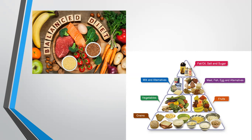A balanced diet must contain food from each of the food groups. In addition, there should be enough water and roughage. The diet should be planned so that the body gets a sufficient amount of each nutrient as well as roughage and water.